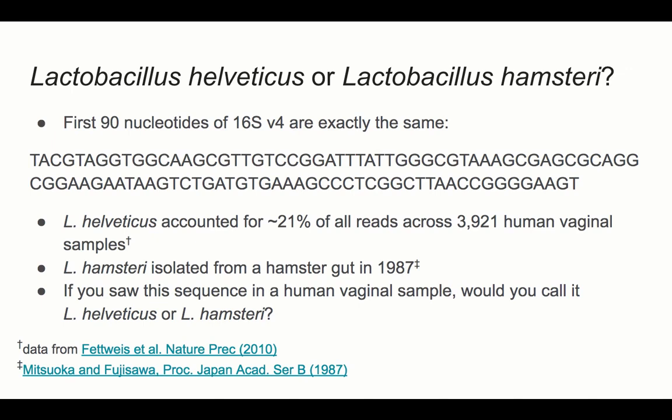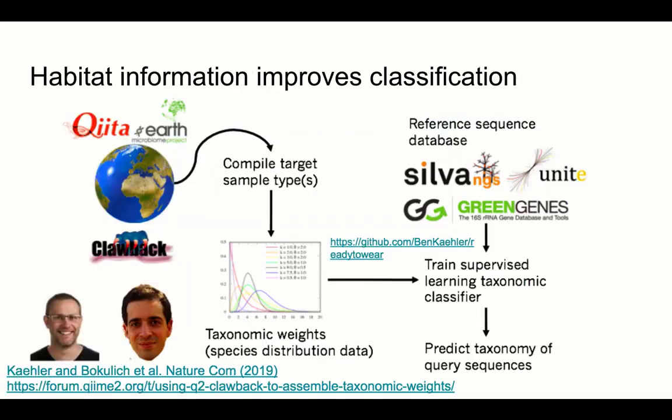One way to use habitat information is to download a custom database for a specific habitat. Custom databases exist for human vaginal samples and several other habitats, and they have been shown to increase the accuracy of taxonomic classification past the genus level down to the species level and possibly beyond.